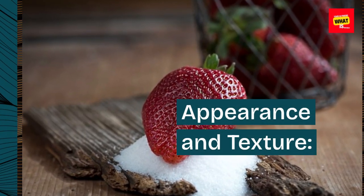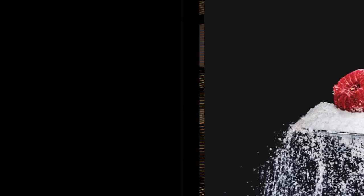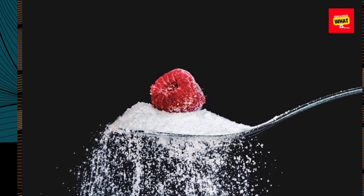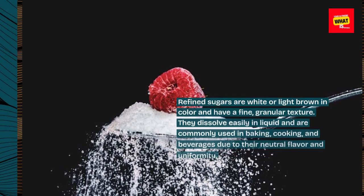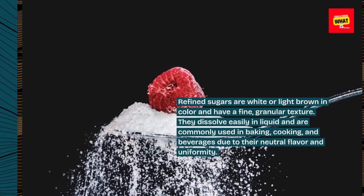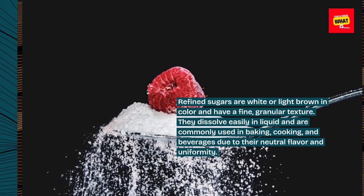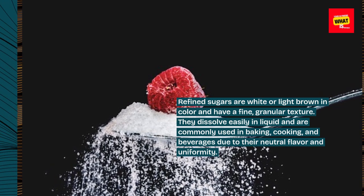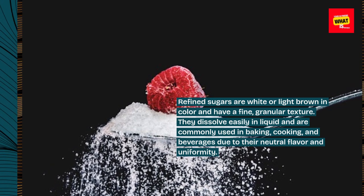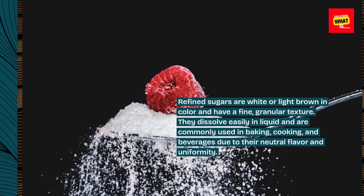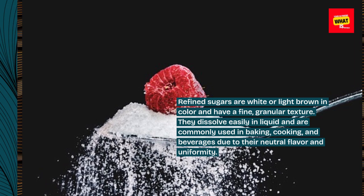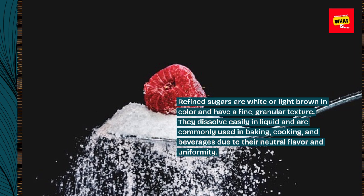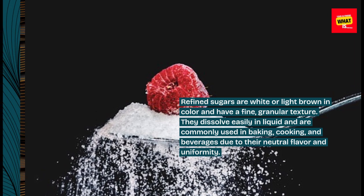Appearance and Texture: Refined sugars are white or light brown in color and have a fine, granular texture. They dissolve easily in liquid and are commonly used in baking, cooking, and beverages due to their neutral flavor and uniformity.